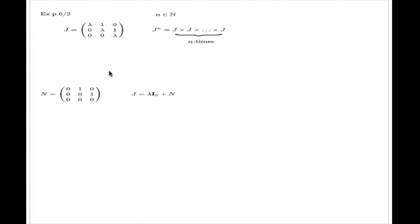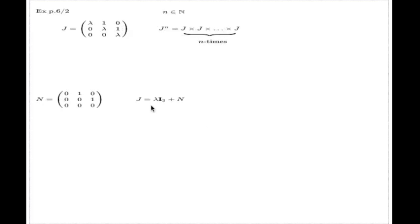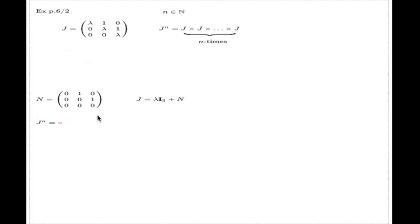J will be lambda times the identity of size 3, plus N. Everybody agrees that J can be represented like this. So when we go after the nth power of J, it's the same as going after the nth power of (λI + N). It's just the nth power of a binomial.